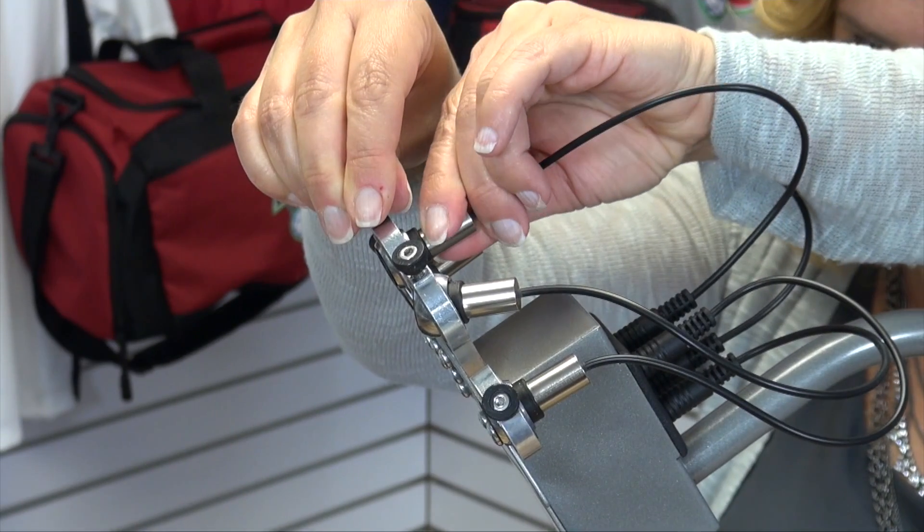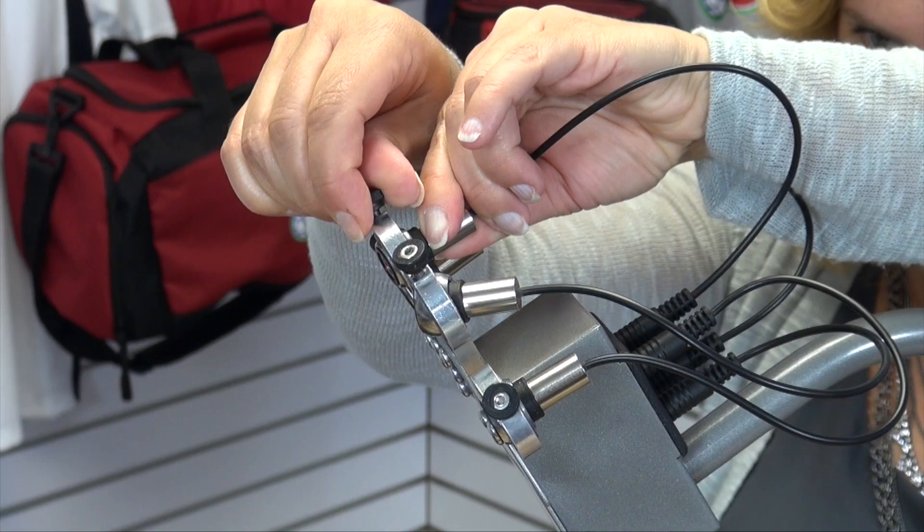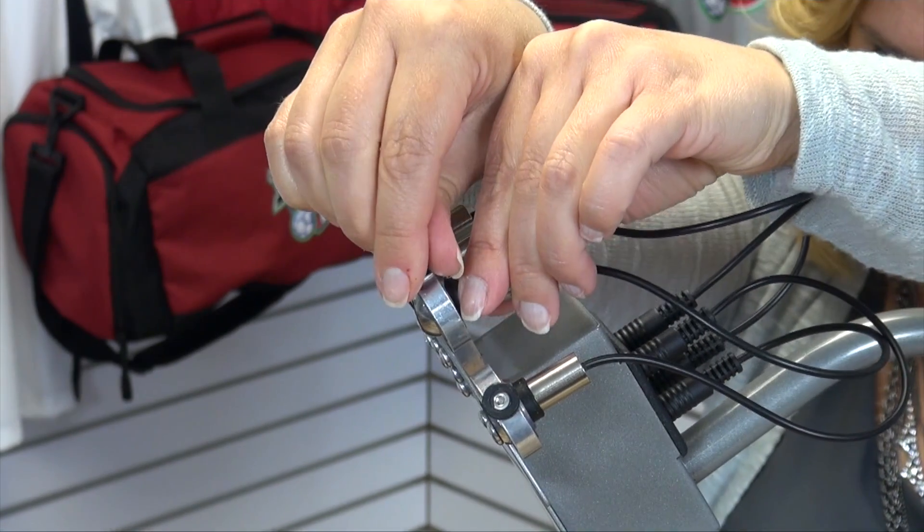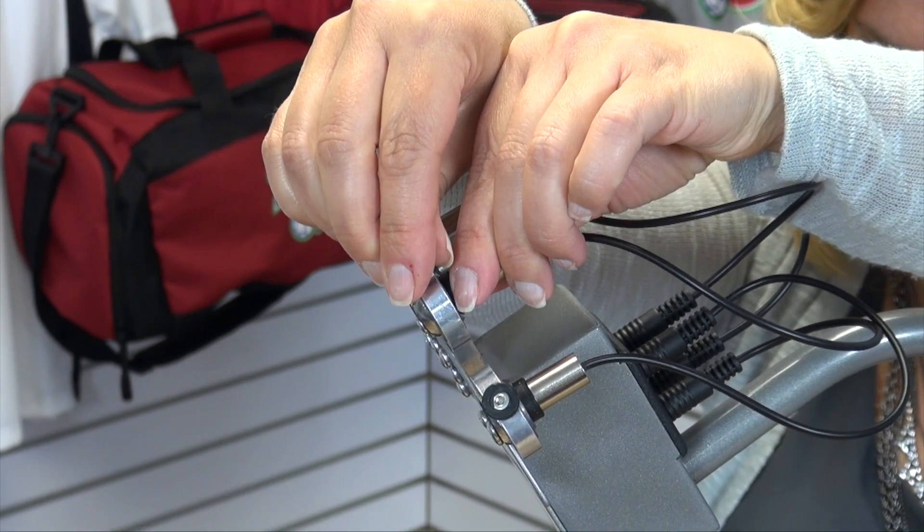The lasers can easily be adjusted by loosening the thumbscrews on the top of each laser. Once you position the laser into place, tighten the thumbscrews to secure its location.